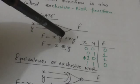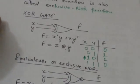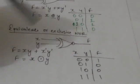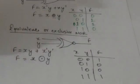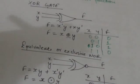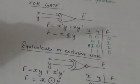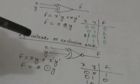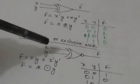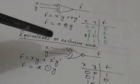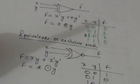This is the operator symbol for the exclusive OR function. Next is the equivalence, or exclusive NOR function. This is the logic gate which implements this function, where X and Y are the inputs and F is the output. Since it is the complement of the exclusive OR function, it is the sum of the minterms XY and X'Y', and this is its operator symbol.